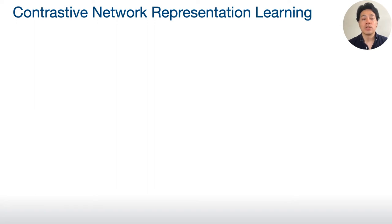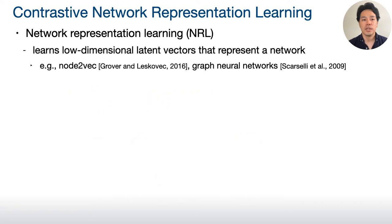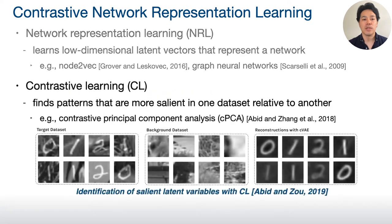It utilizes two machine learning schemes. The first one is network representation learning, which extracts latent vectors from a network, as shown in the figure here. The second scheme is contrastive learning.